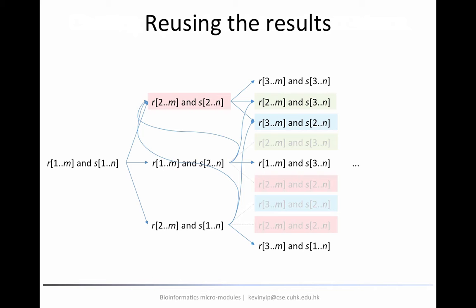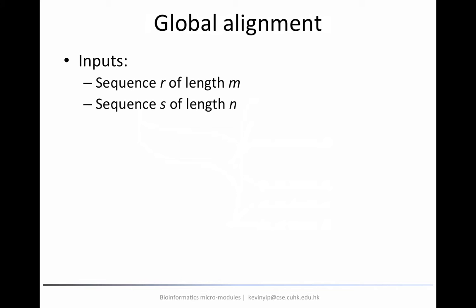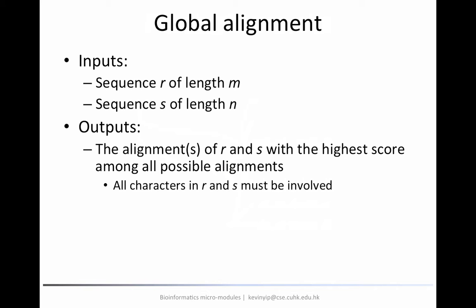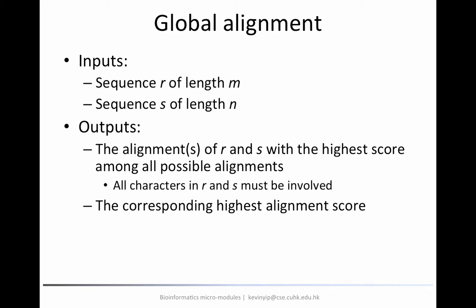By doing that, we can actually save a lot of time. Now, how do we apply these ideas to solving the global alignment problem? The inputs are two sequences, r of length m and s of length n. What we try to do is find the alignment or alignments with the highest alignment score among all possible alignments. Sometimes there is only one alignment achieving this score, and sometimes there are multiple. Since we are talking about global alignment, all characters in r and all characters in s must be involved. We also want to output the highest alignment score.